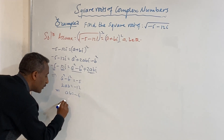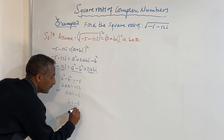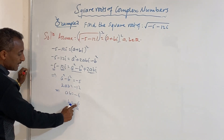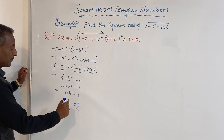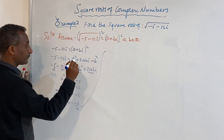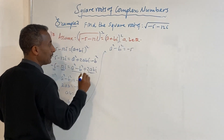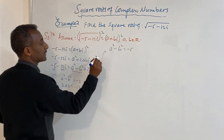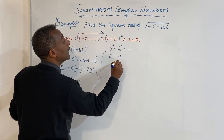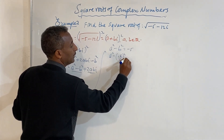From ab equals minus 6, we get b equals minus 6 over a. Substituting into the real part equation: a squared minus 36 over a squared equals minus 5.